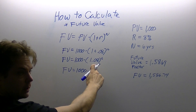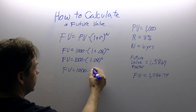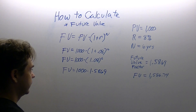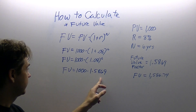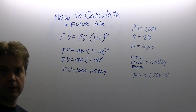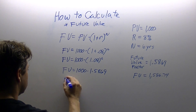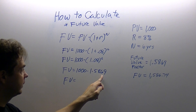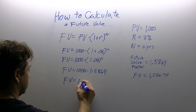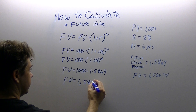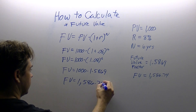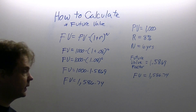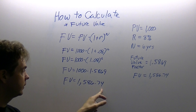1.08 raised to the 6th power is 1.5869. Once we have this, now again we are going to do our order of operations. Drop the future value — 1,000 times 1.5869. 1,000 times 1.5869 gives us $1,586.74.